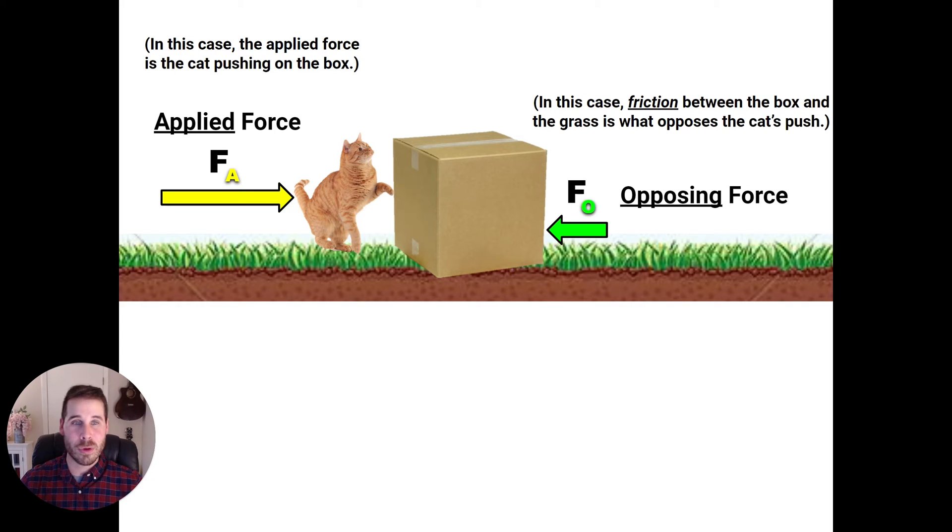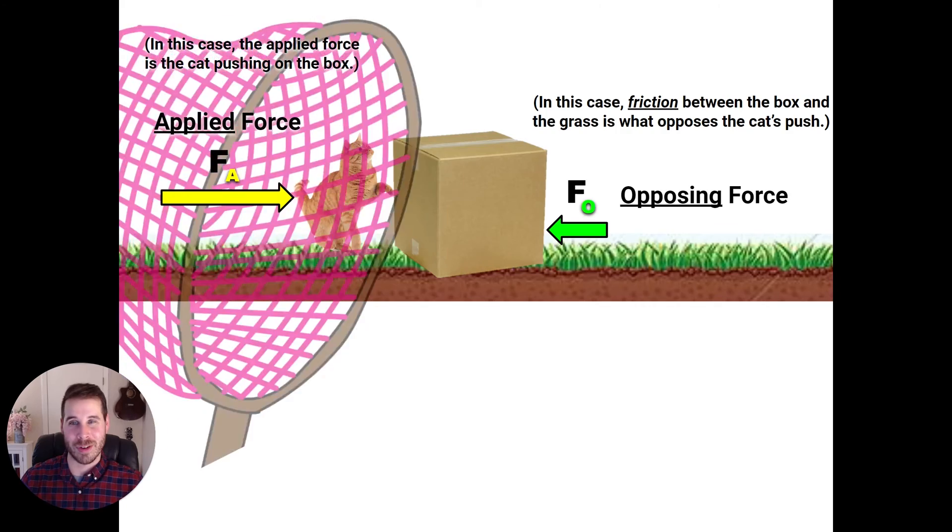So think what kind of force exists that could cause that box to not go as fast as it normally would. Well, friction is something that we encounter every single day as we move around and touch objects. And in this case, friction between the box and the grass beneath it is what's going to oppose the cat's push. So these two forces, the applied force and the opposing force, and by the way, opposing means it's in opposition to, it's against, it's rivaling the applied force, it's going to fight it and make it smaller.